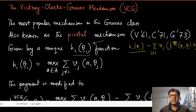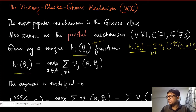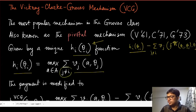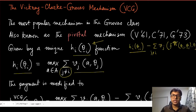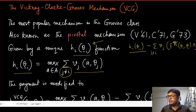Based on different h_i(θ_{-i}), you can get different mechanisms and payment rules. In the case of Clark's pivotal rule or the VCG mechanism, h_i(θ_{-i}) is the maximum over the sum of the valuations of all agents except agent i. Another way of interpreting this: agent i is removed from the system, and we maximize the sum of valuations of all other agents — that maximum value is h_i(θ_{-i}).